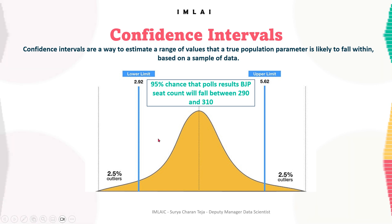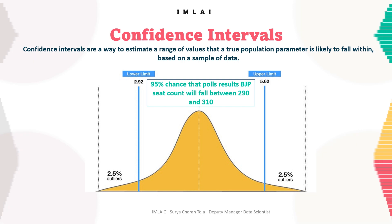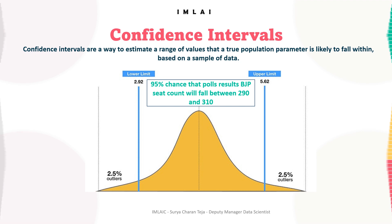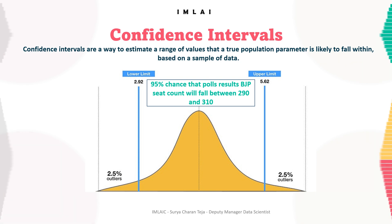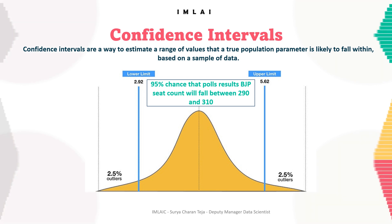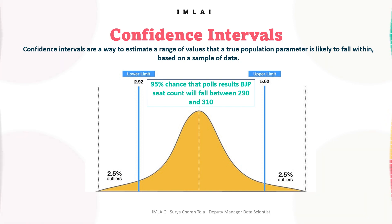A 95% confidence interval, for example, means that if you repeat the sampling process many times and calculate a confidence interval for each sample, you would expect 95% of those intervals to contain the true population average. The confidence interval is typically calculated using the sample mean, sample standard deviation, and the size of the sample, along with a formula that takes into account the variability of the data and the level of confidence desired.